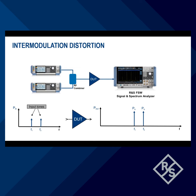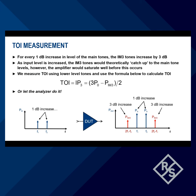When two tones are provided as stimulus to an amplifier, the amp will output those two tones, plus IM3 products on either side with equal spacing. Fifth- and seventh-order IM products appear as well, but since they are spaced further away and are at lower levels, they are rarely measured. As the level of the input tones increases by 1 dB, the IM3 tones will increase by 3 dB.